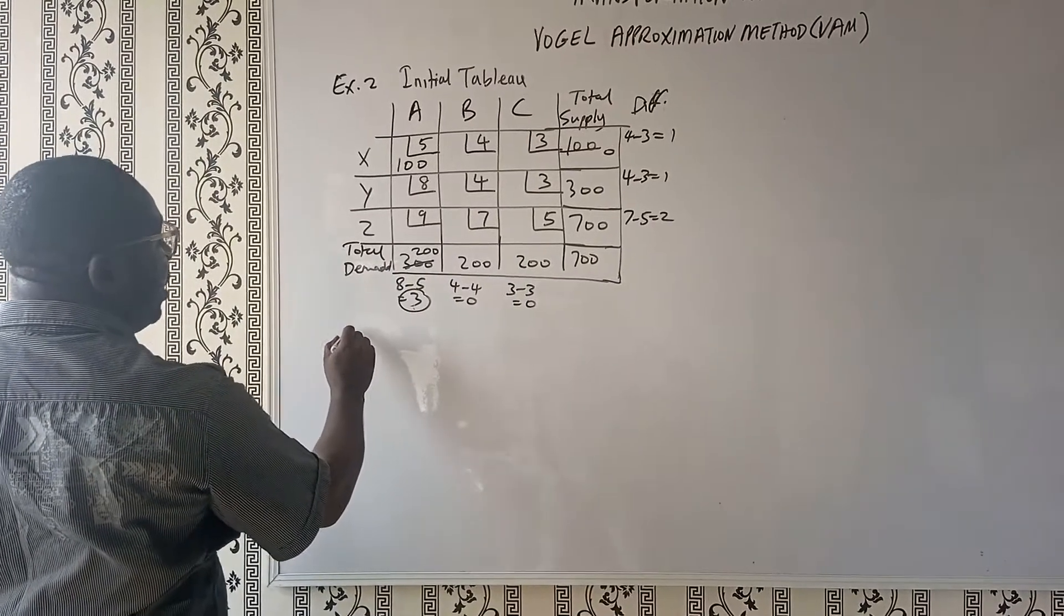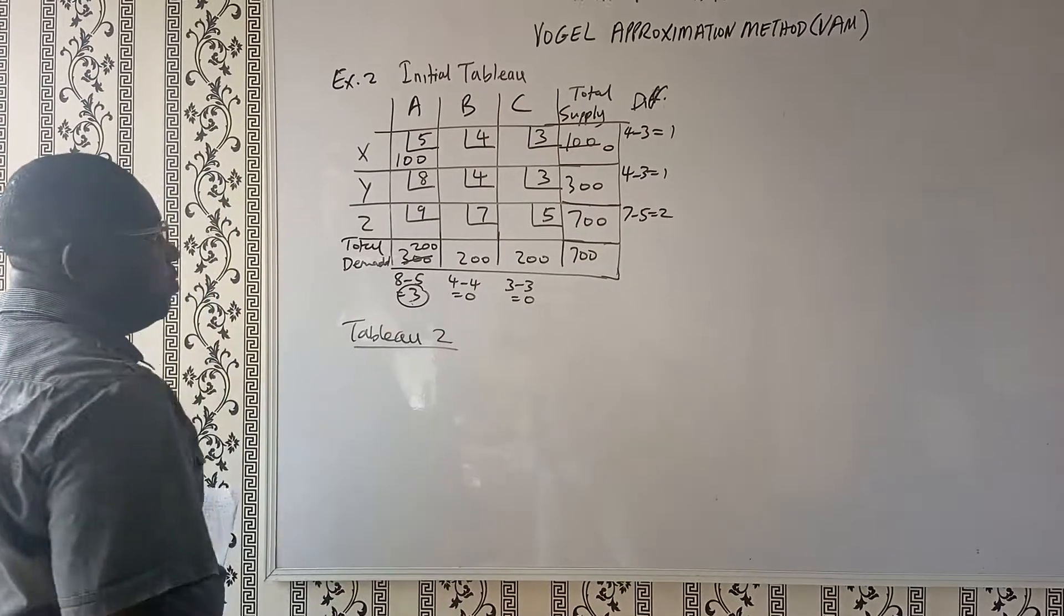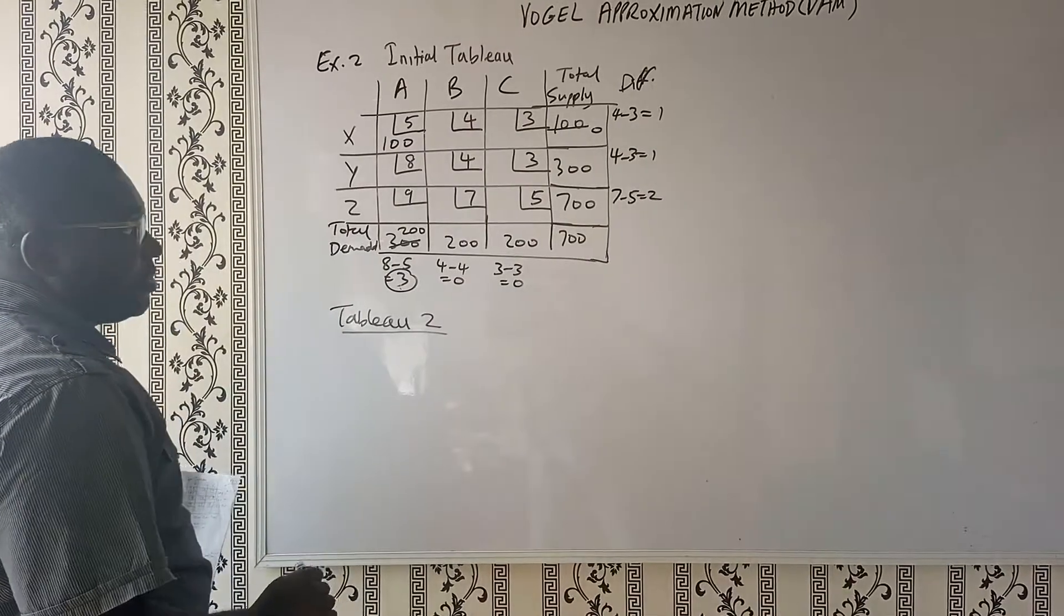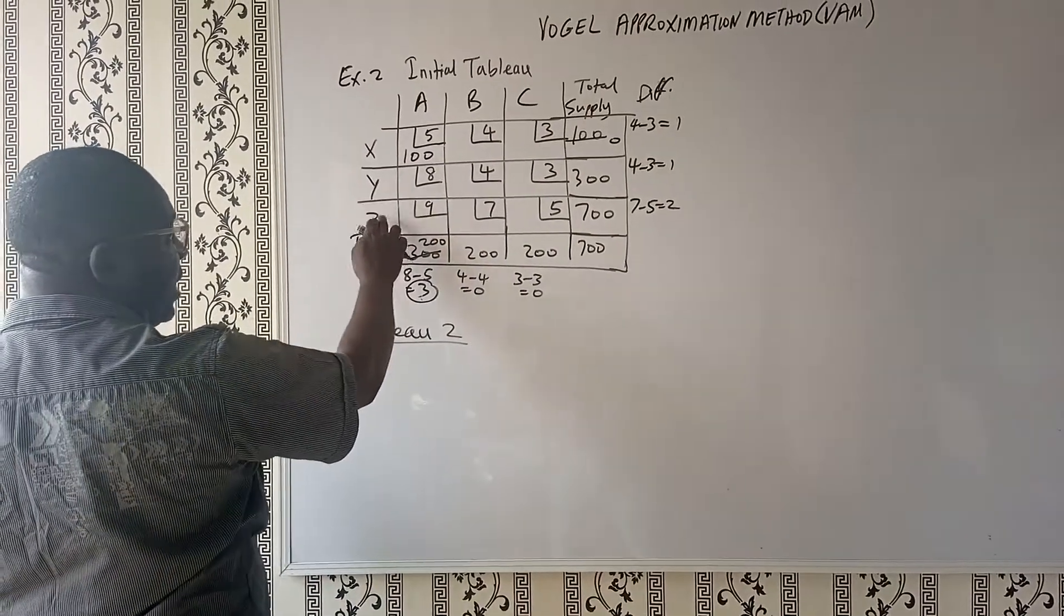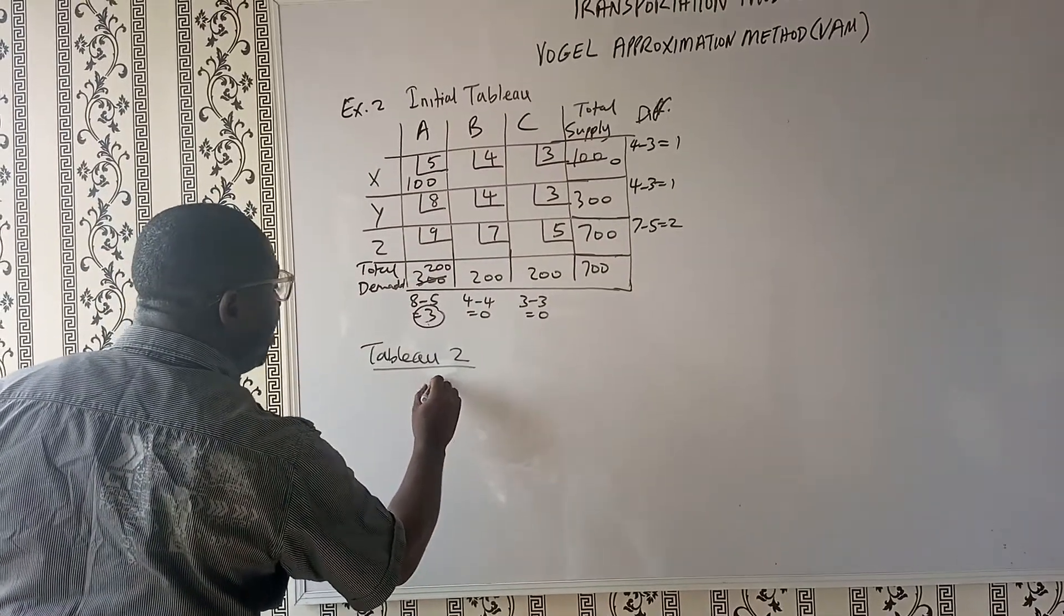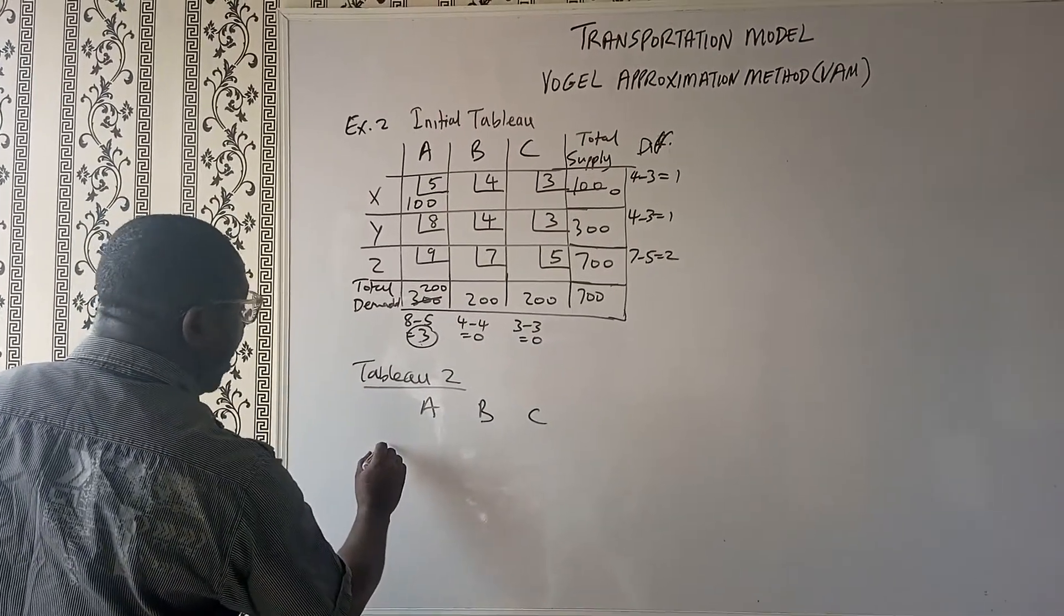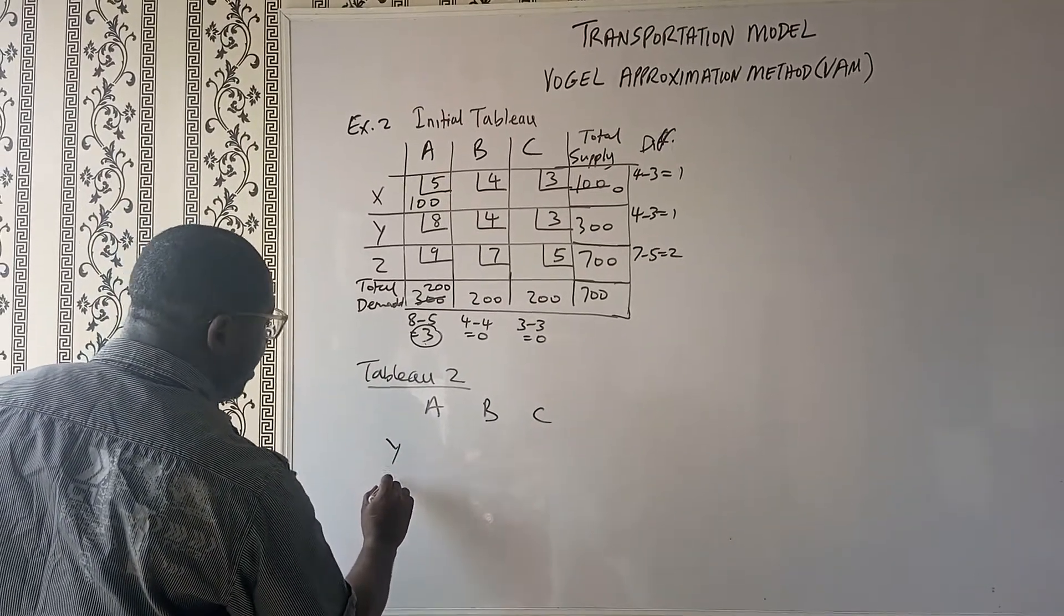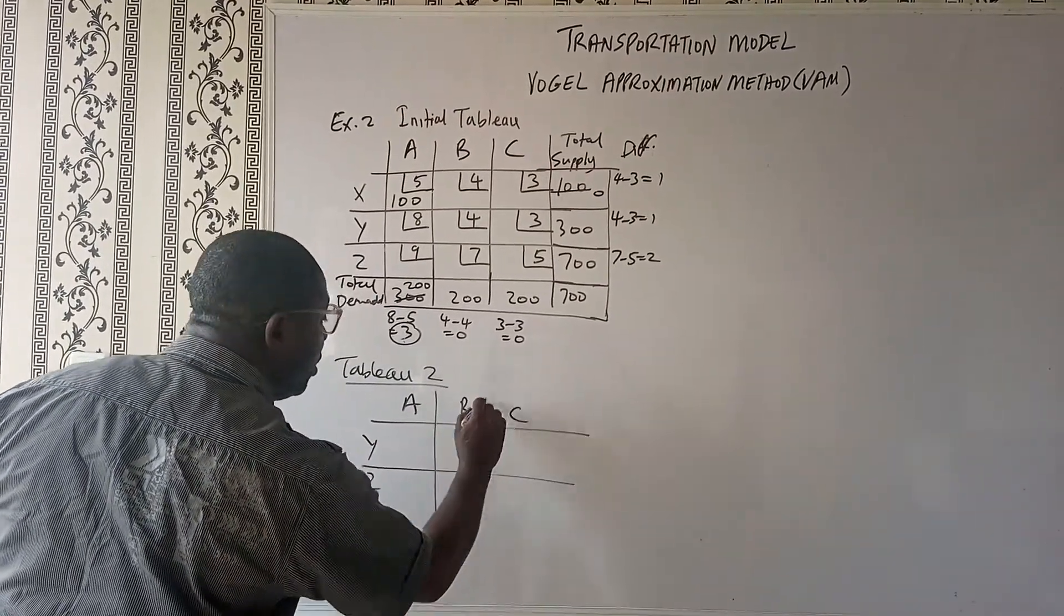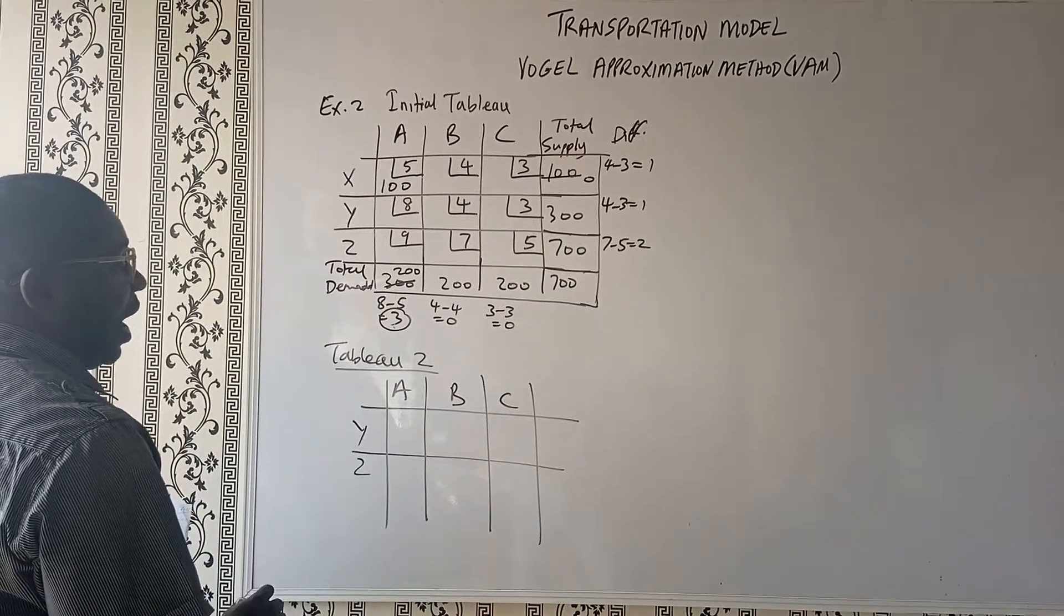So we are going to now have tableau 2. In tableau 2, we are going to eliminate X and we will retain Y and Z. And then we have column A, B, and C. So we are going to have A, B, and C. And then we have also Y and Z.